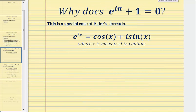So the question is, why does e raised to the power of i pi plus one equals zero? This is actually the result of a special case of Euler's formula, where Euler's formula is e raised to the power of ix equals cosine x plus i sine x.